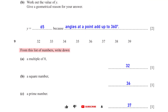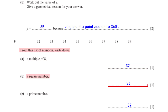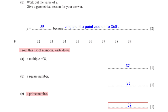From this list of numbers, write down a multiple of 8 — the multiple of 8 in the list is 32, since 8 × 4 = 32. Write down a square number — the square number is 36, since 6² = 36. Write down a prime number — the prime number is 37, as it has only two factors: 1 and itself.